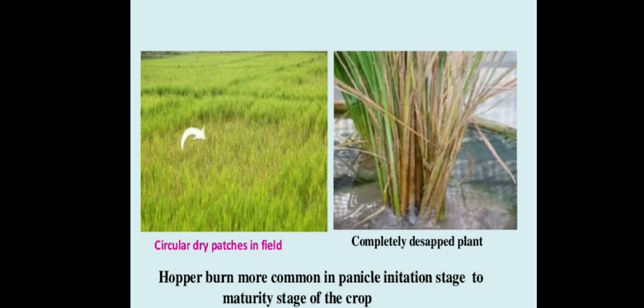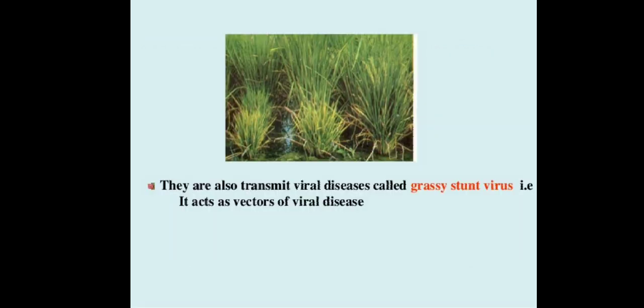Images show circular dry patches on the field indicating infestation and in severe cases completely disappeared plants. Hopper burn is more common from the panicle irrigation stage to maturity. The images also show viral disease caused by the grassy stunt virus, as the brown plant hopper acts as a vector of this viral disease.